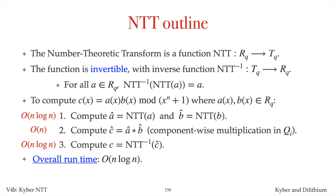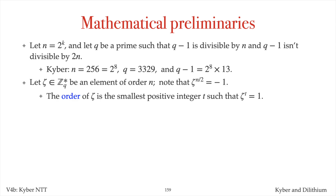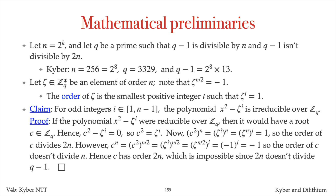Let n be a power of 2, and let q be a prime number such that q minus 1 is divisible by n, and q minus 1 is not divisible by 2n. Kyber has n equals 256 and prime 3329, with q minus 1 being 256 times 13. Let zeta be an element of order n in the integers modulo q, and note that zeta to the power n/2 equals minus 1. For odd integers i between 1 and n minus 1, the polynomial x squared minus zeta to the i is irreducible over Zq — so it doesn't factor into a product of two linear polynomials. I've written the proof of this claim here; you can read it as an optional exercise.